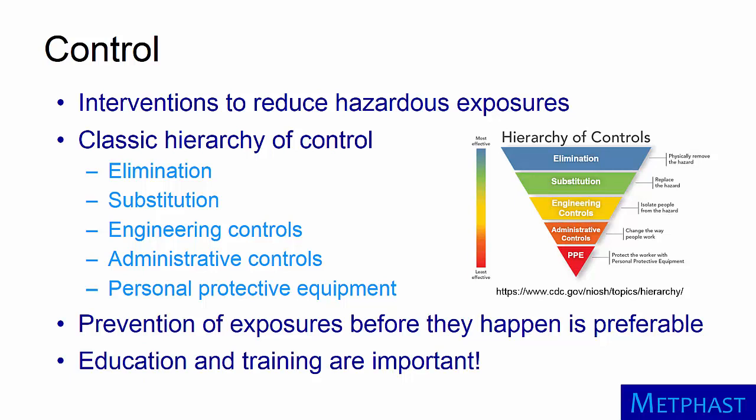At the top of the hierarchy is elimination of the hazard. Elimination means physically removing the hazard from the workplace, and it is at the top of the hierarchy because exposures can no longer occur. Next is substitution — replacing the hazard with something that is less hazardous.